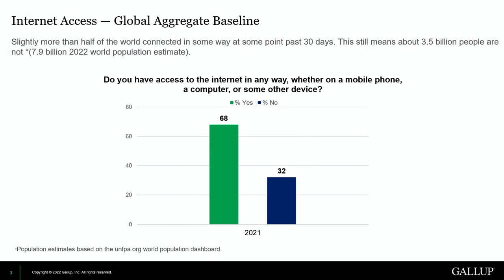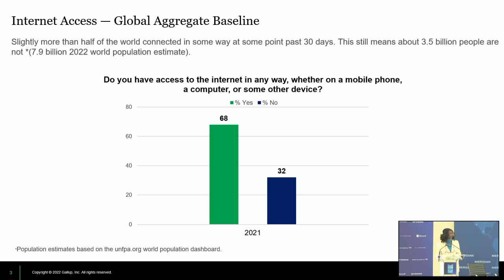I'll start with the global baseline. Gallup does world polling on almost every issue under the sun, and certainly they've done it on access and connectivity. The global baseline shows about 68% of the global population has access at some point during a 30-day period. Comparing that with current world population estimates of 7.9 billion, there's still roughly half the world's population that is not connected in some way.